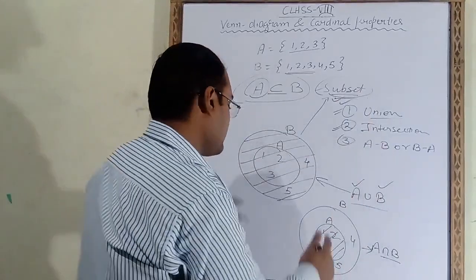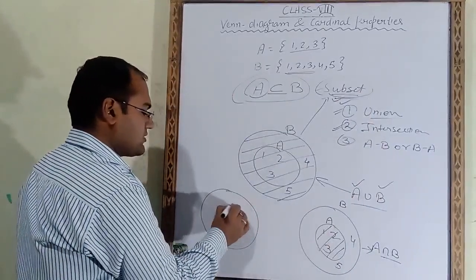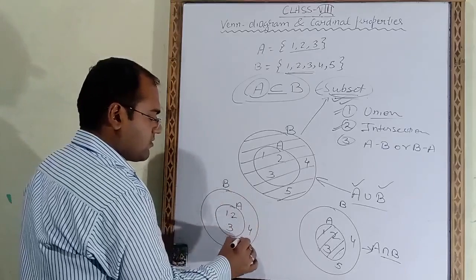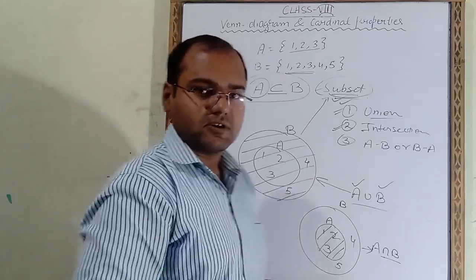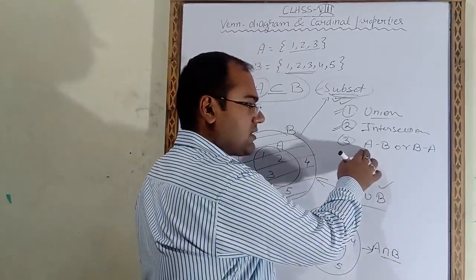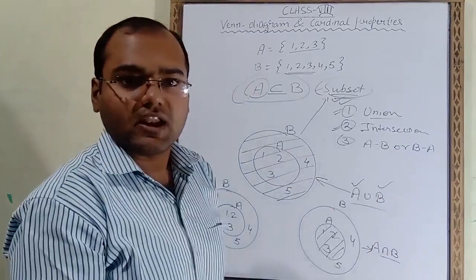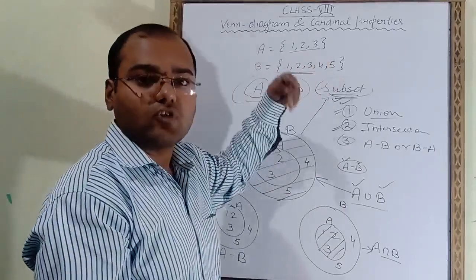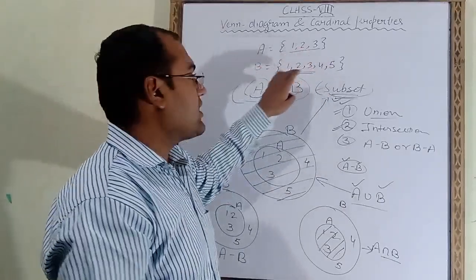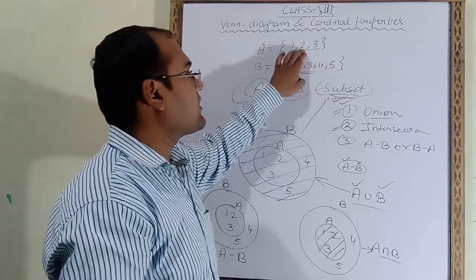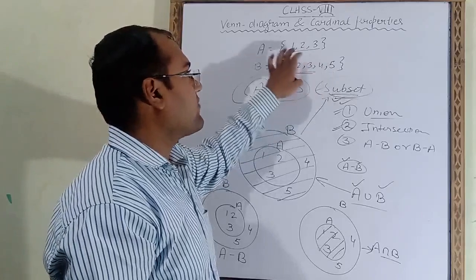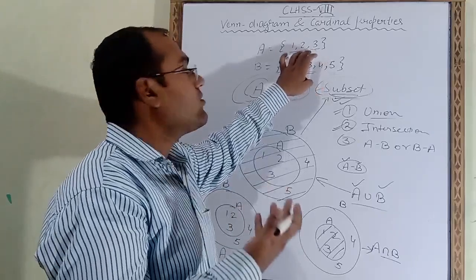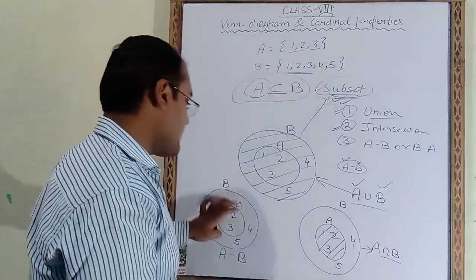Third is A minus B. We draw the same subset figure with B as the outer circle and A inside, containing 1, 2, 3, and B having 4, 5 outside. A minus B means from A we remove B's elements. B's elements are 1, 2, 3, 4, 5 — removing all of these from A leaves nothing. So nothing is shaded for A minus B.